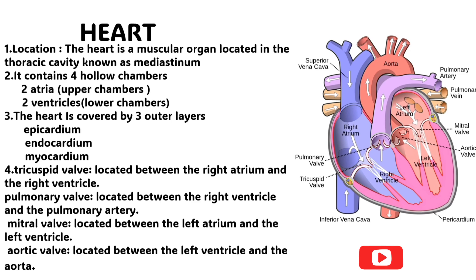As you can see in the picture, the tricuspid valve is located between the right atrium and right ventricle, preventing backward flow of blood between them. The pulmonary valve is located between the right ventricle and the pulmonary artery. The mitral valve is located between the left atrium and left ventricle. The aortic valve is located between the left ventricle and the aorta.